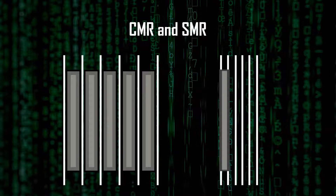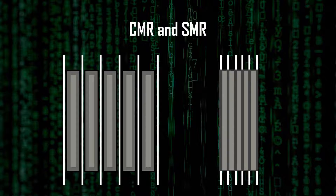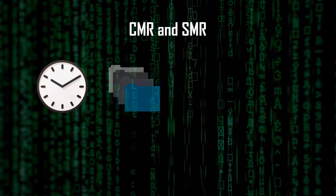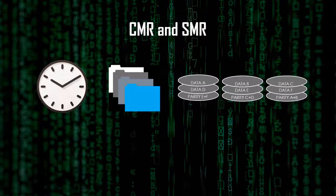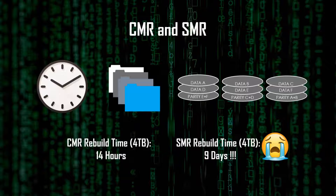However, there is a trade-off for this. In order to write the new data, the old data is read, stored in the cache, erased, and then rewritten with the new data. Obviously, this process takes longer, especially when writing large data at once — something that NAS OS do when rebuilding a disk from parity. Rebuilding a 4TB drive from parity takes around 14 hours for CMR. And for SMR, it takes a whopping 9 days to complete the same process.